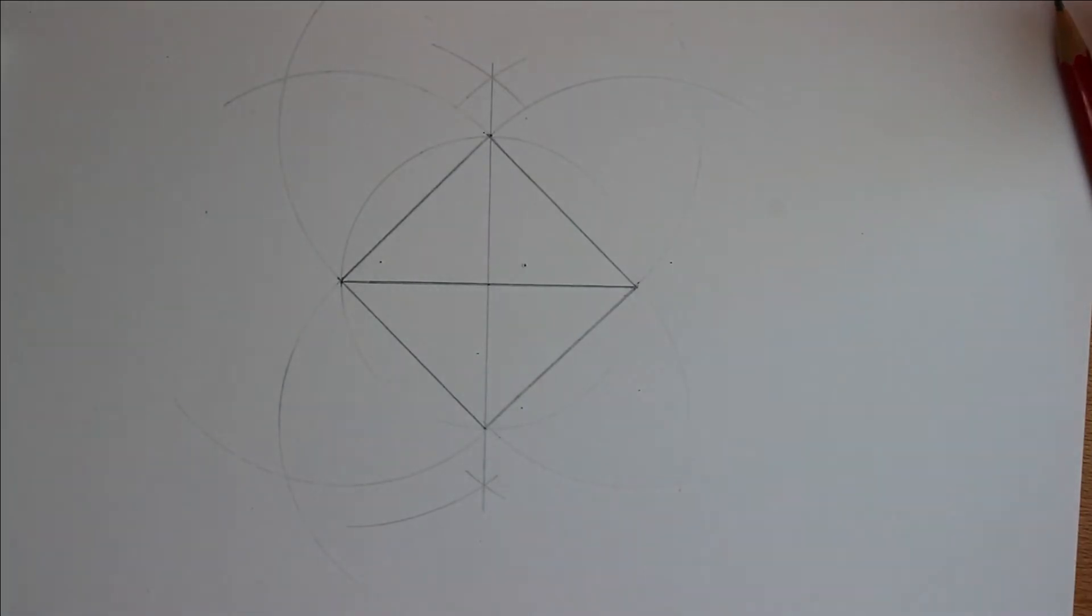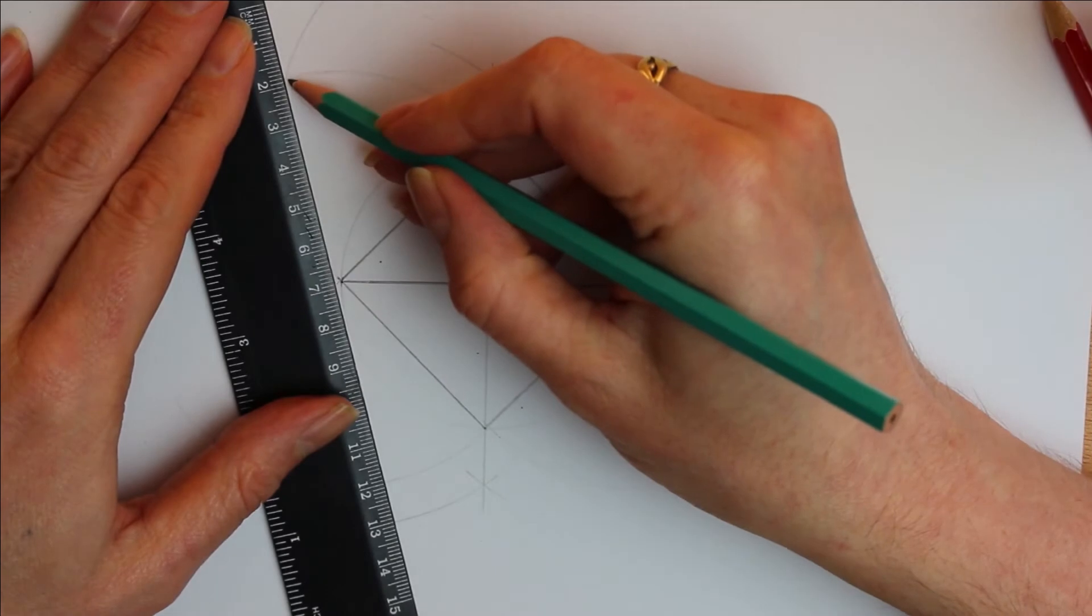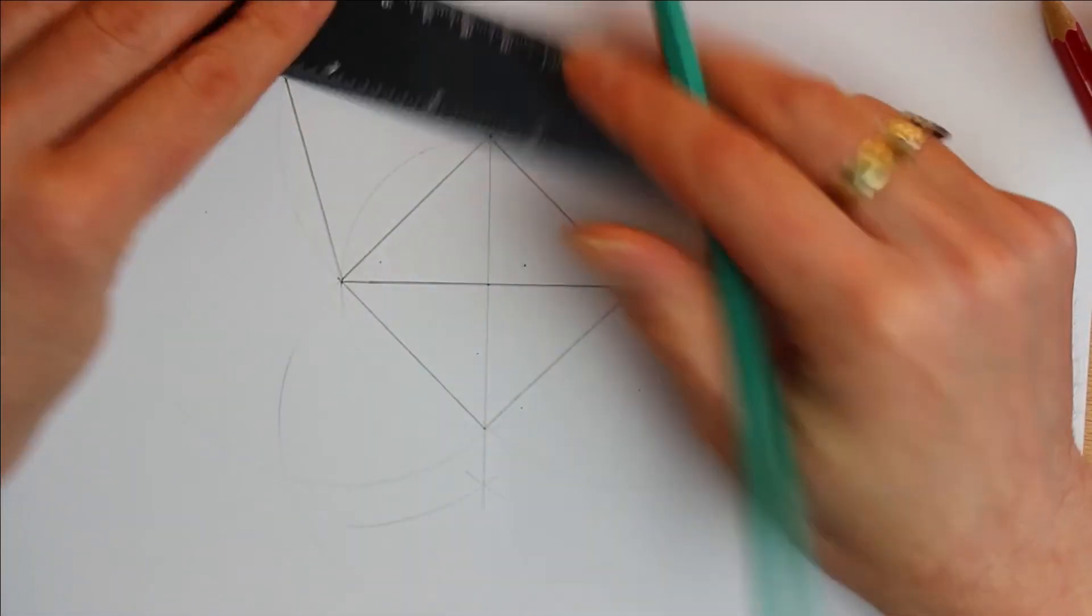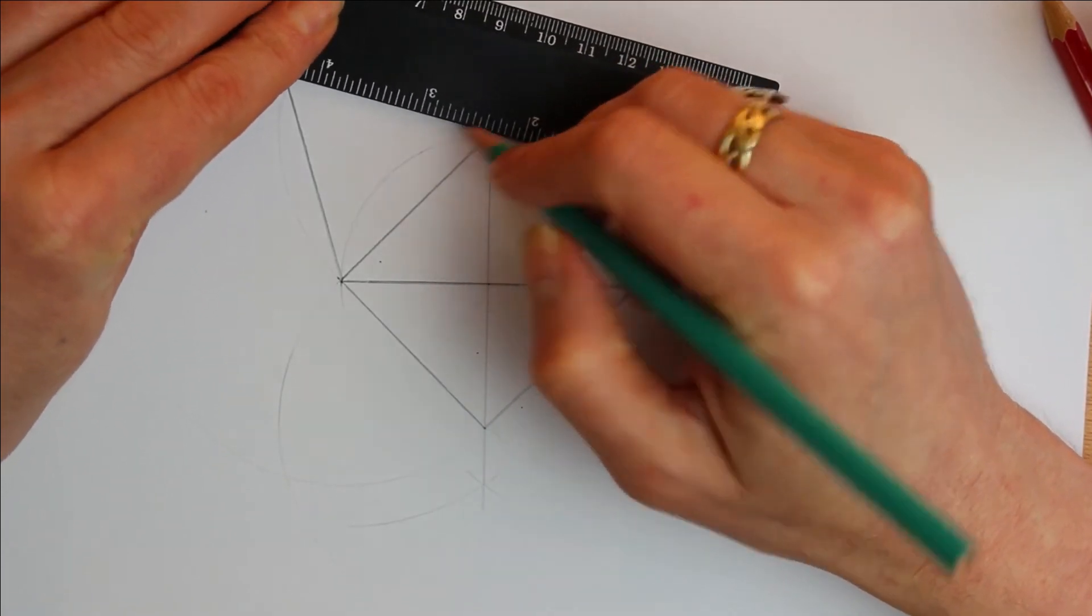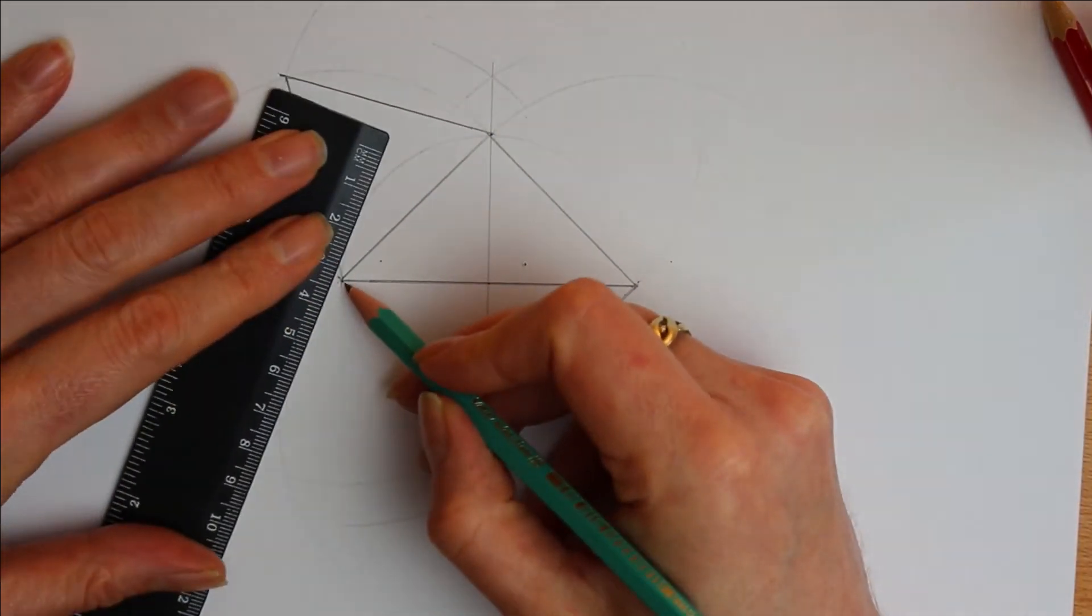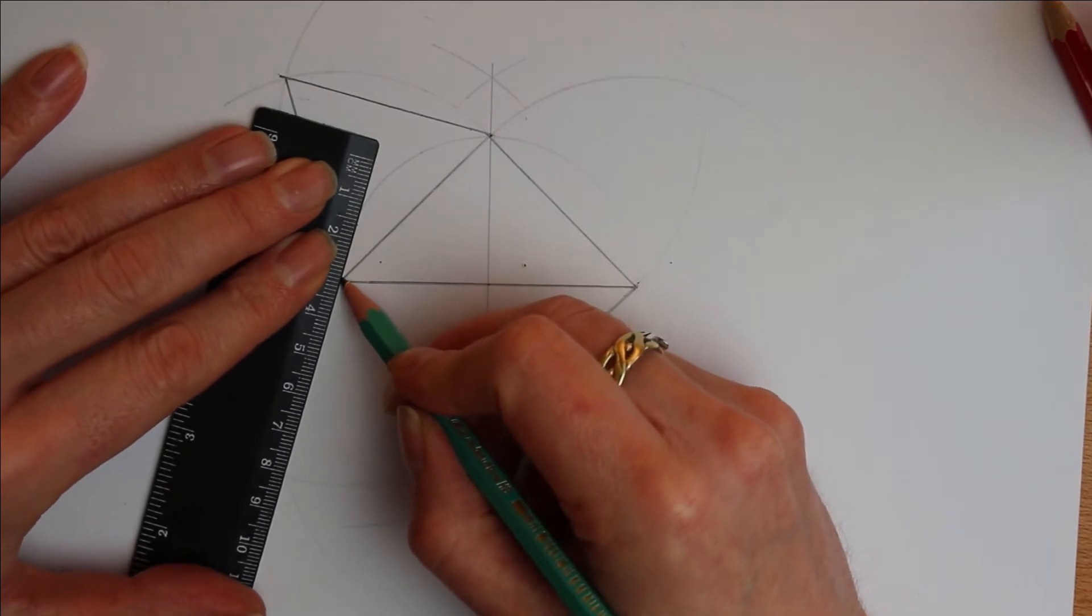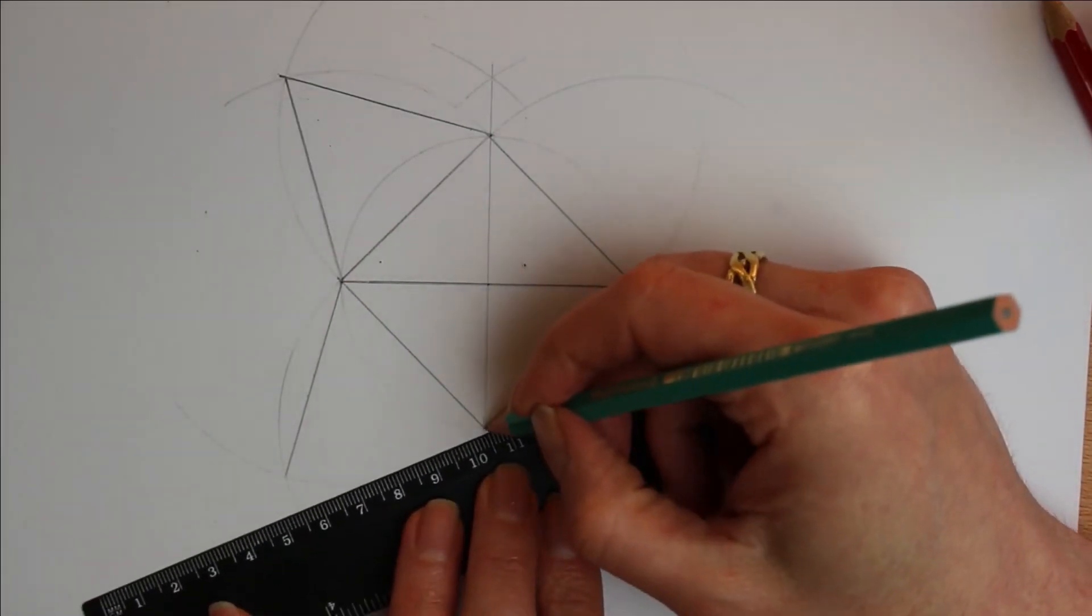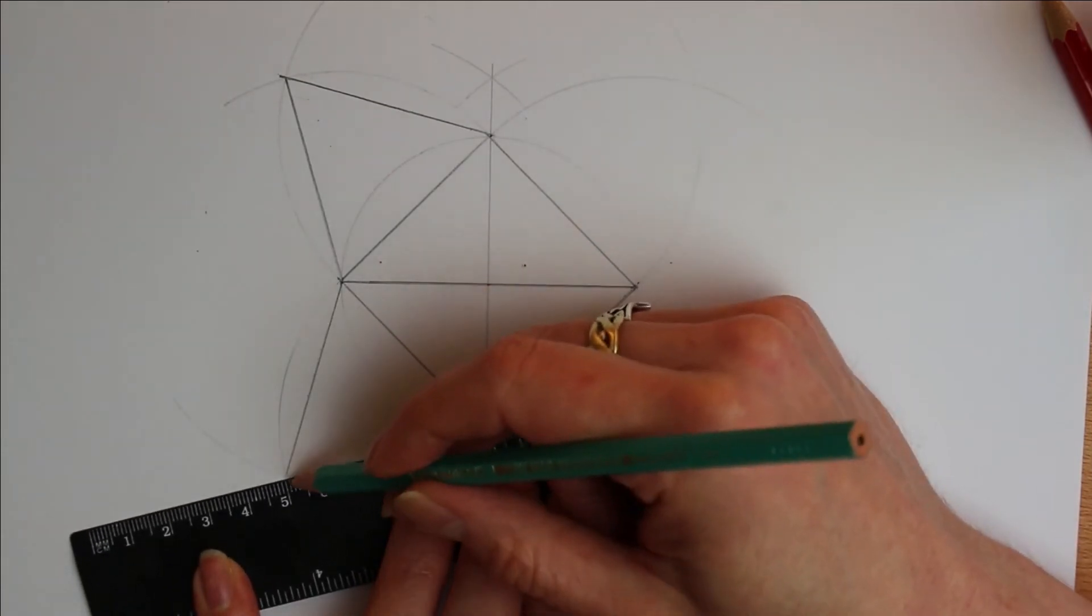So the final step now is to create the equilateral triangles. We're just joining up the corners of the squares with where the arcs intersect. As you can see it's taking shape already.